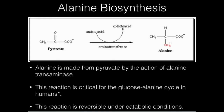It turns out that pyruvate produced through anaerobic glycolysis, instead of forming so much lactate, will be transaminated to make alanine. The alanine is then dumped into the blood, goes to the liver, and the liver reverses it back to pyruvate and resynthesizes glucose. We have a whole video discussing the glucose-alanine cycle — it's a very important cycle for vigorously exercising skeletal muscle.